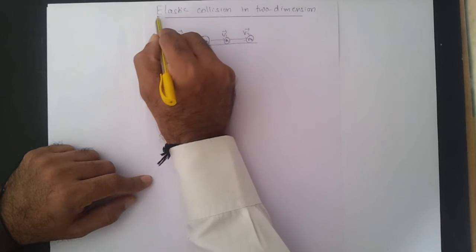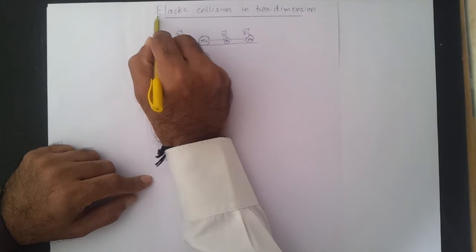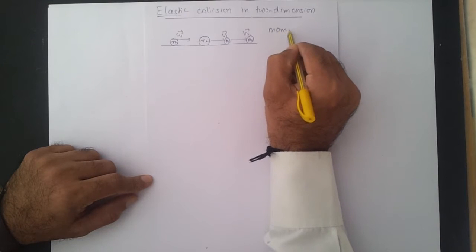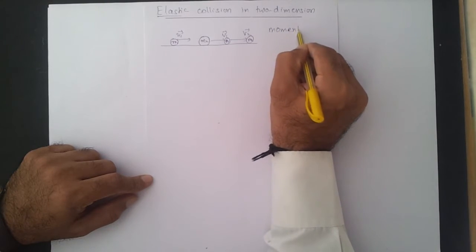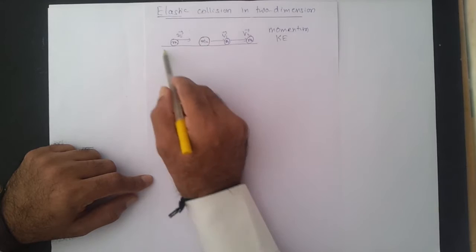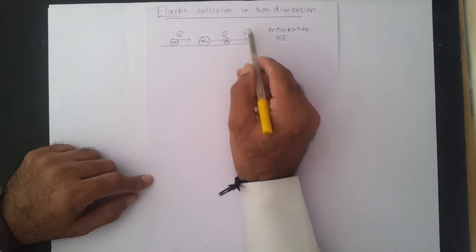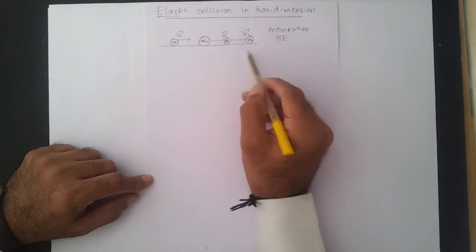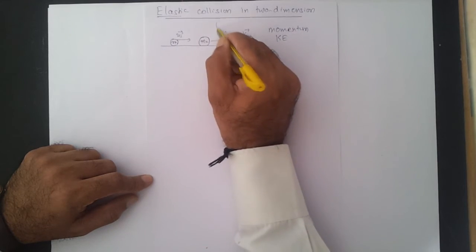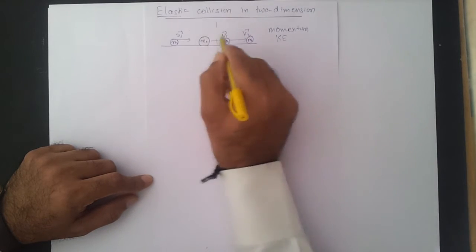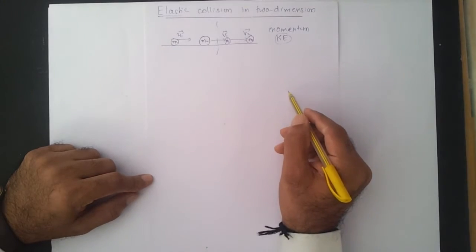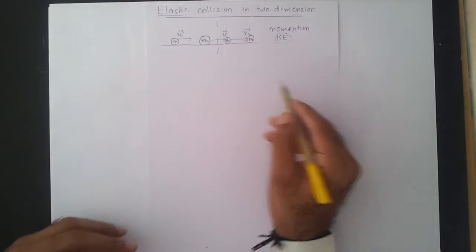The word elastic — elastic collision means momentum is conserved and kinetic energy is also conserved. The total momentum of the system before and after collision is equal. Similarly, the total kinetic energy before collision equals the total kinetic energy after collision. That is what we mean by an elastic collision.